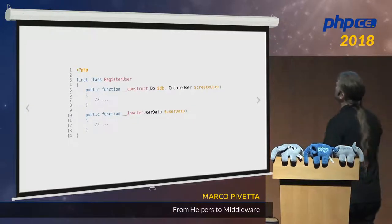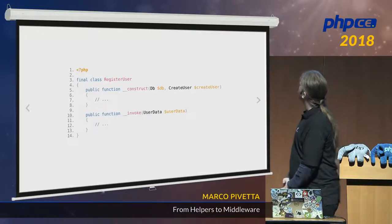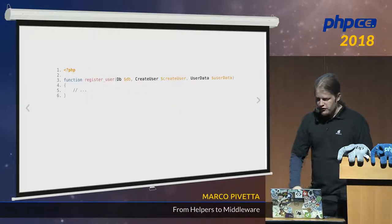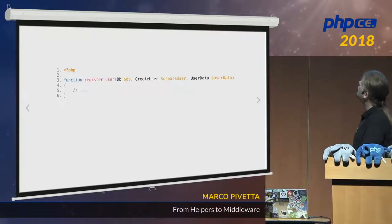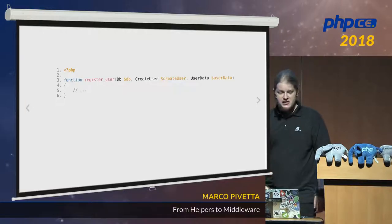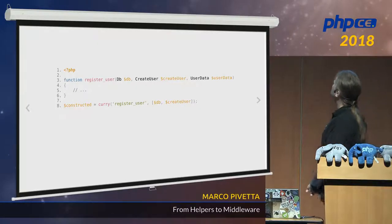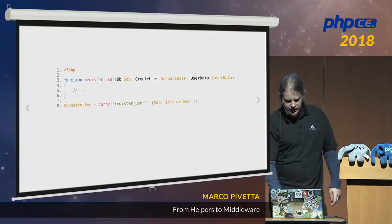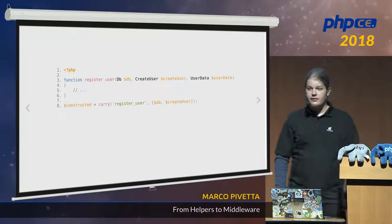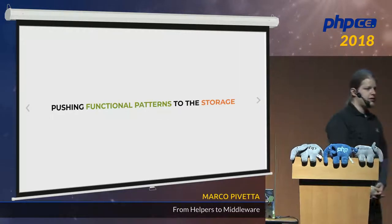Let me write it in PHP so that everyone understands it. You have a 'registerUser' that receives a database and a CreateUserService, you give it some user data, and it does the registration. And if we simplify it further: a 'registerUser' function receives a database, a CreateUserService, and some user data. If we simplify further we can curry it — so a constructed object is a curry of registerUser with the parameters 'db' and 'createUser' already pre-filled. That's what the constructor is doing. The constructor and this curry are the same thing — which is quite interesting.